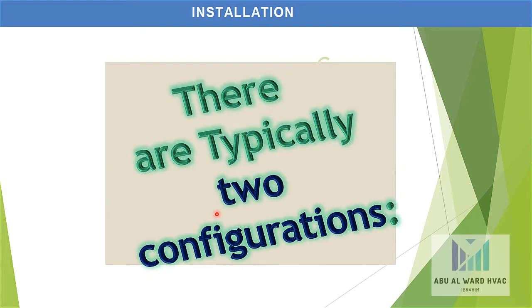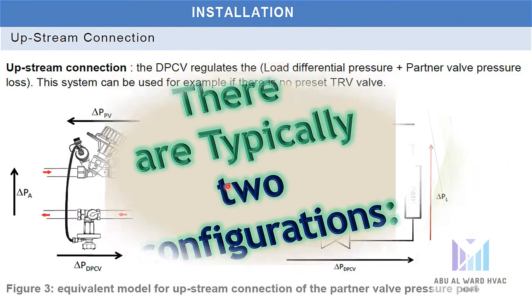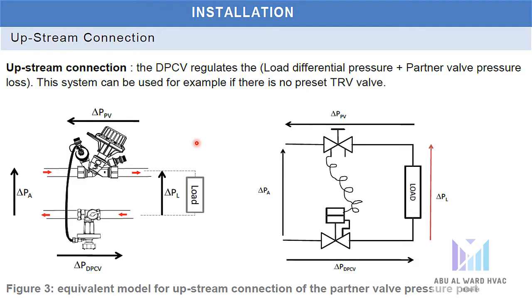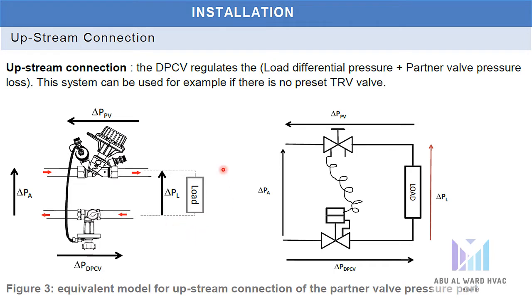For installation, there are typically two configurations. In a downstream connection, the DPCV regulates the load differential pressure only; Delta P for the DPCV equals Delta P load, which is typically Delta P A. In an upstream connection, the DPCV regulates the load differential pressure plus the partner valve pressure loss. This can be used where there is no preset TRV valve; in this case Delta P DPCV equals Delta P load plus Delta P of the partner valve.